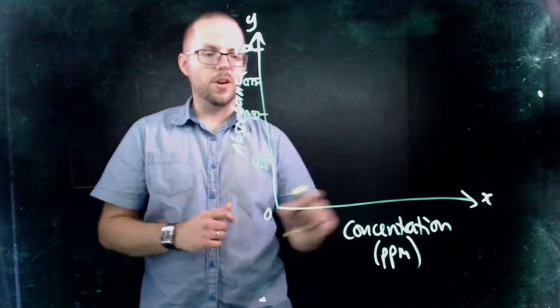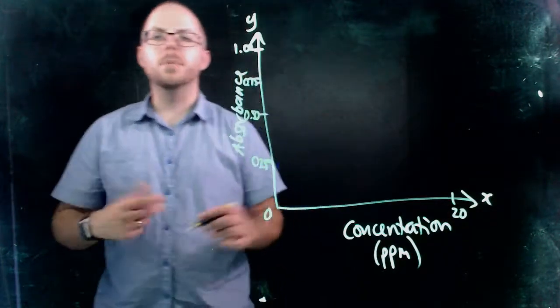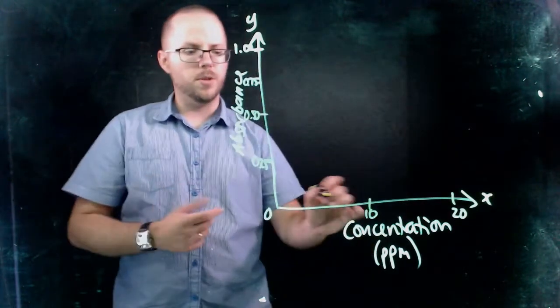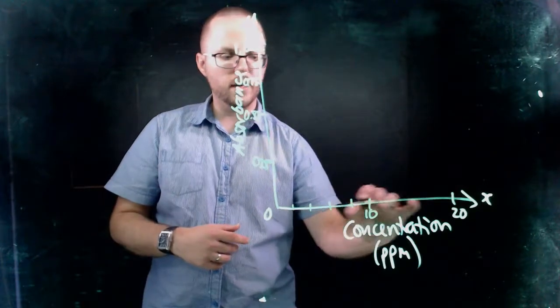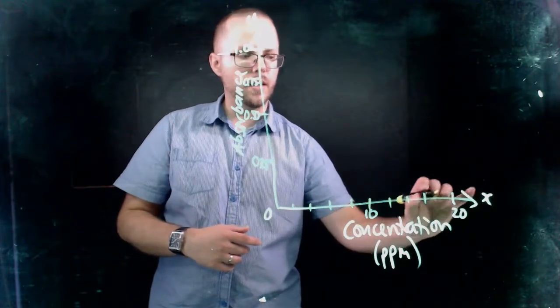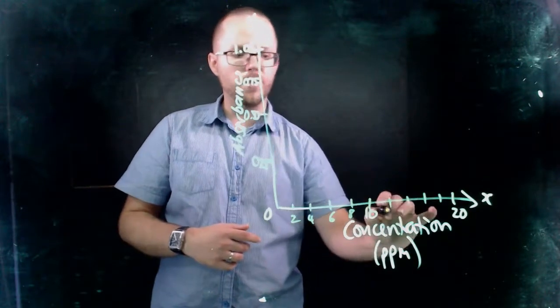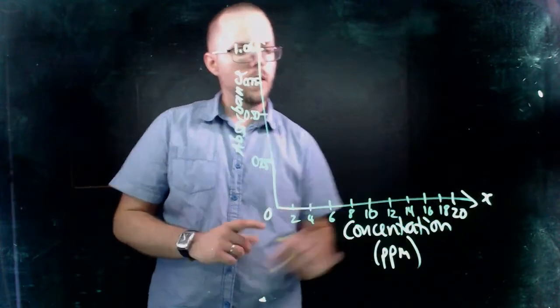And same sort of thing with concentration. So let's say that I've measured samples up to 20 parts per million for a given analyte, for a given substance. So halfway between would be 10. So let's say I'm going 2, 4, 6, 8, 10, 12, 14, 16, 18. This totally depends on what you're measuring.